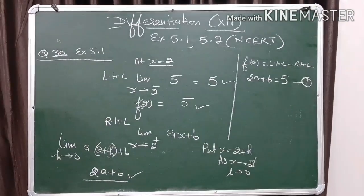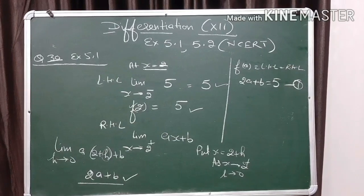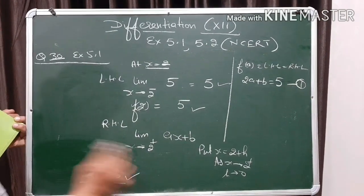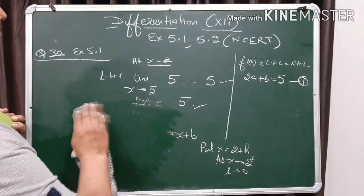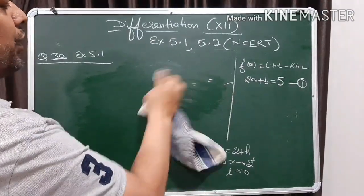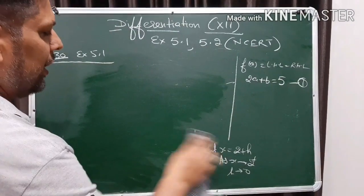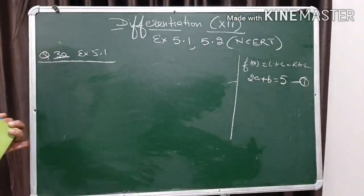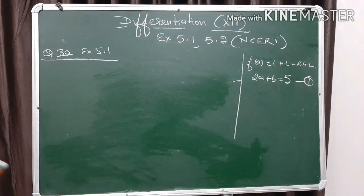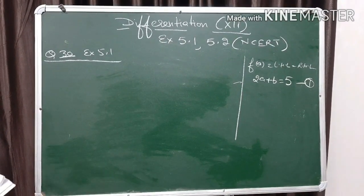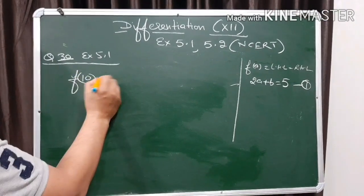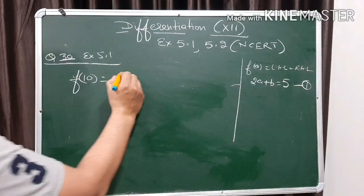Now we'll go for the second point where the function is changing, which is at x equals 10. At x equals 10, for the left hand limit the function is ax plus b, and for the right hand limit the function is the constant 21. So f of 10 equals 21.